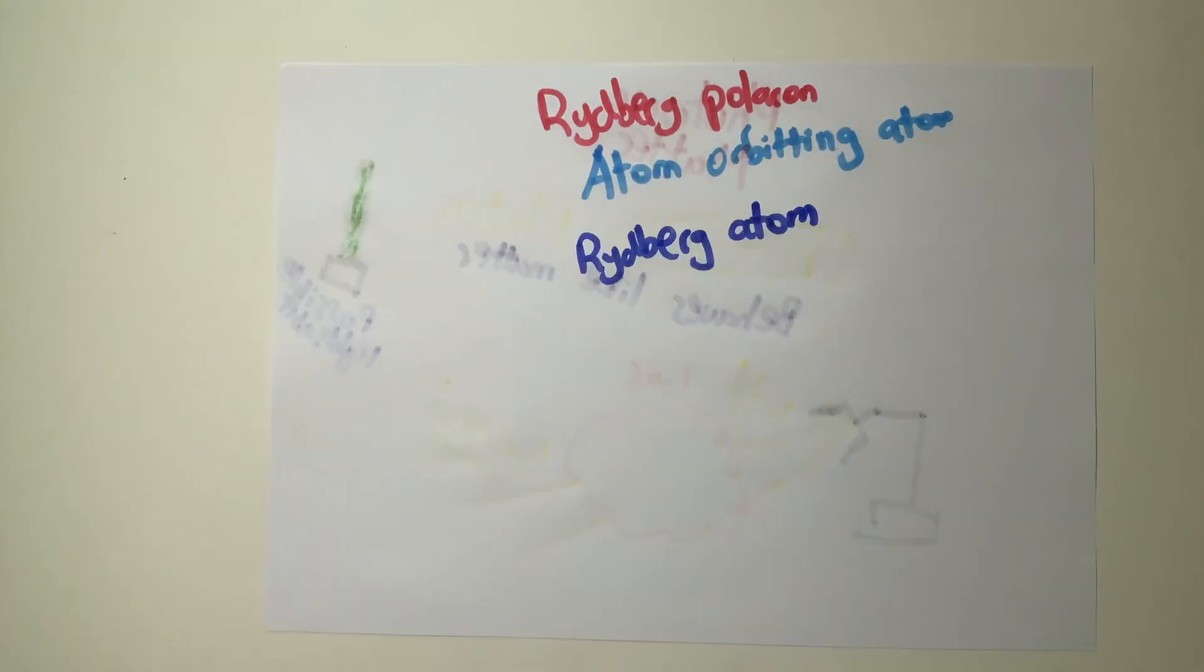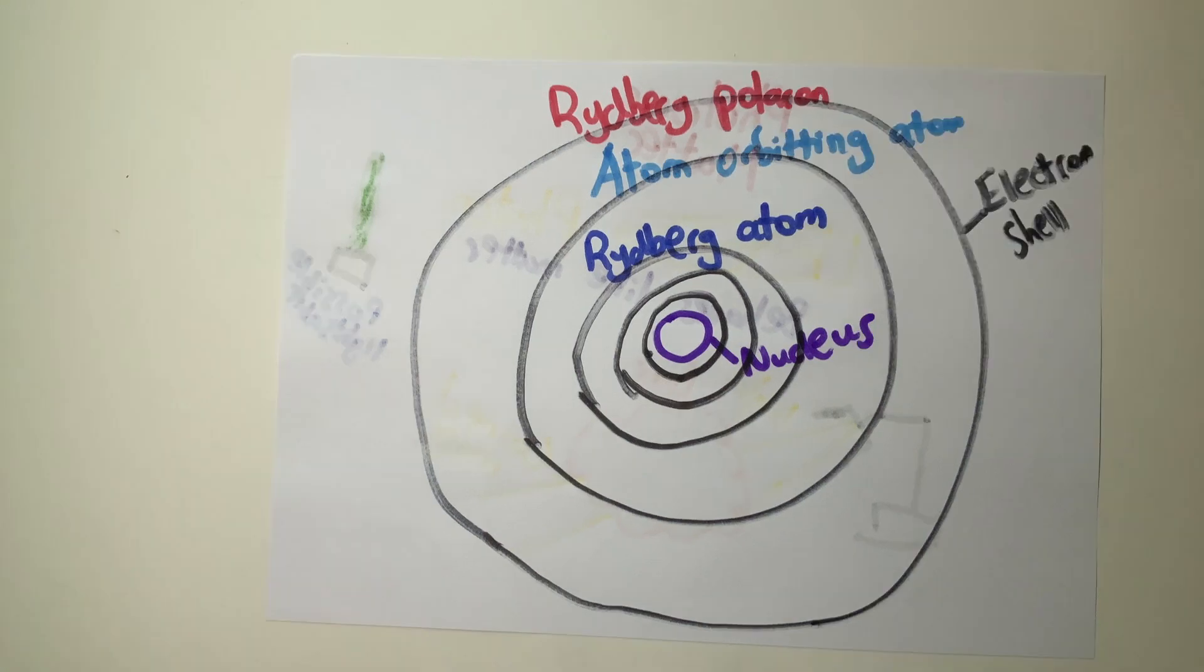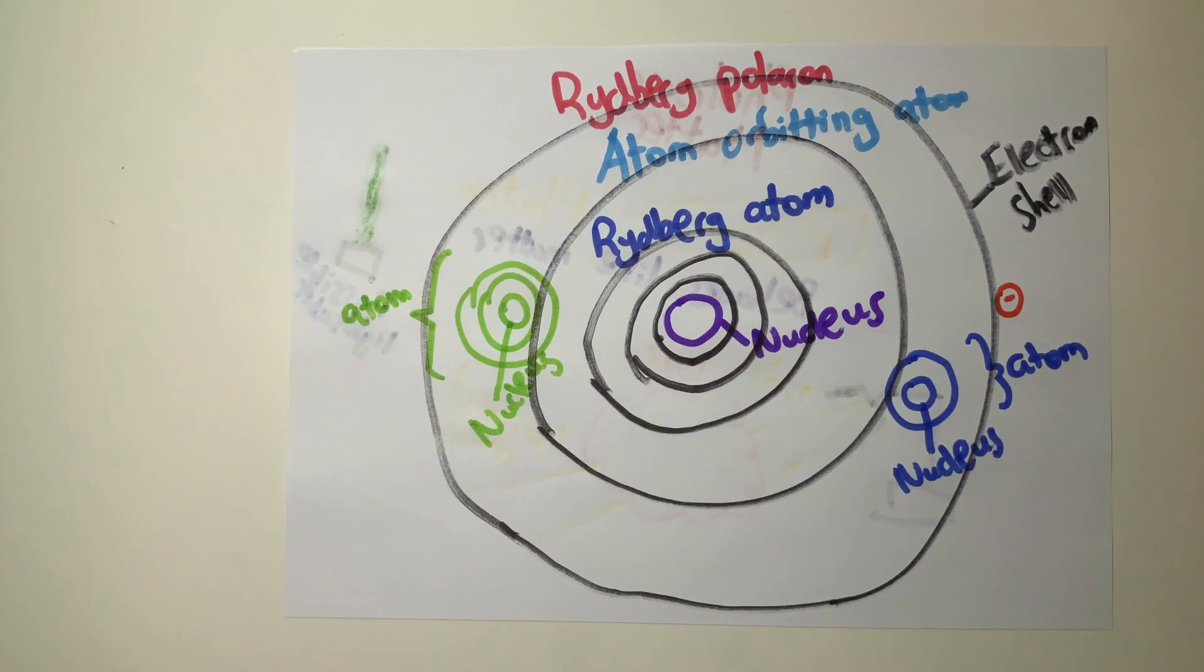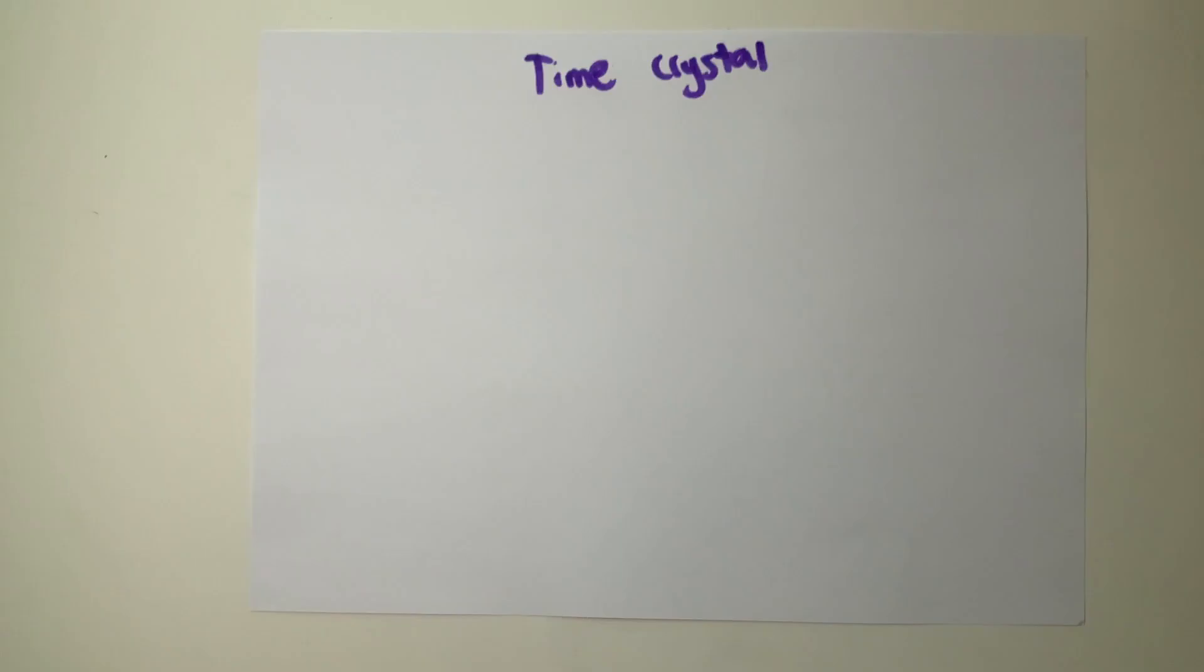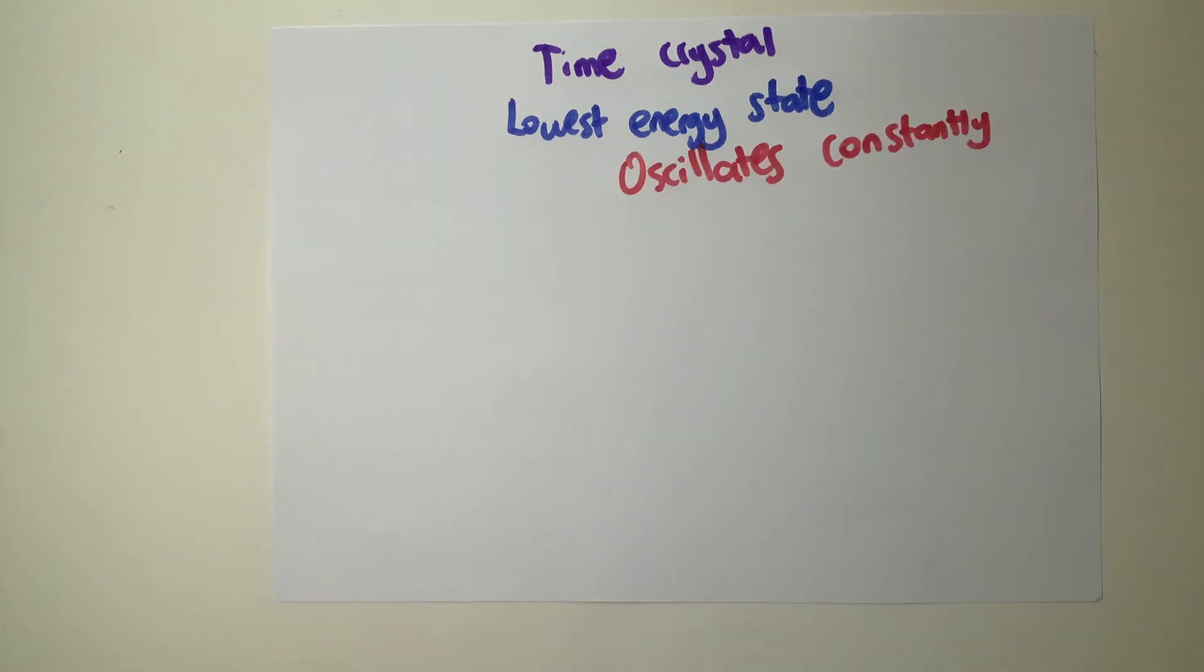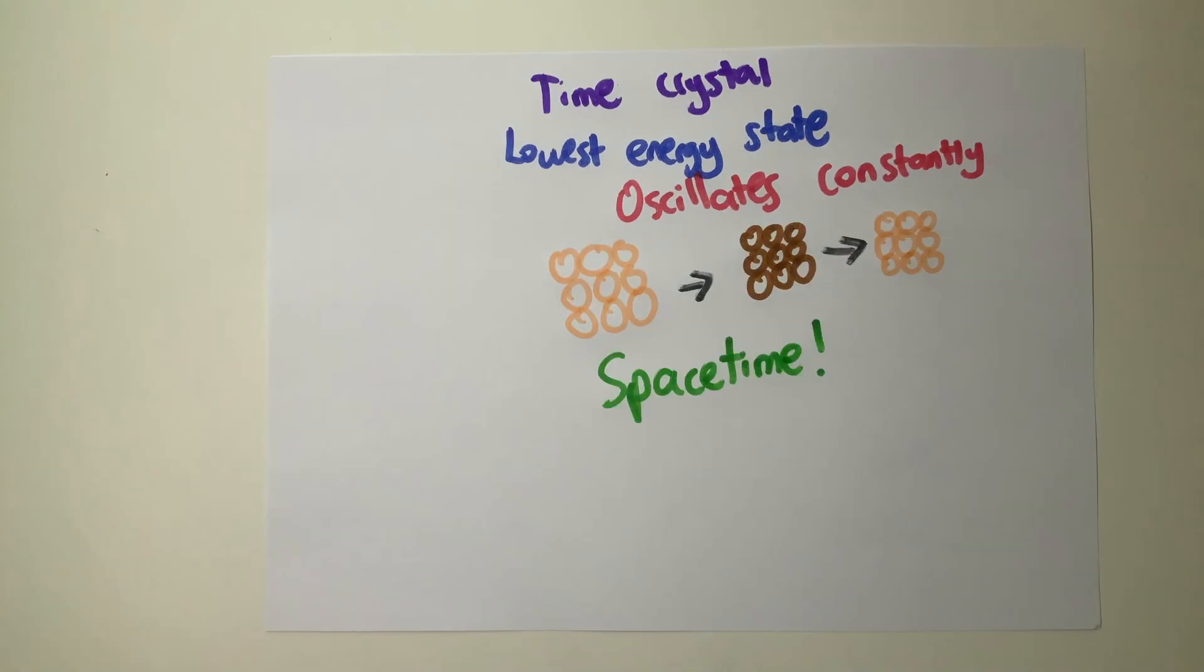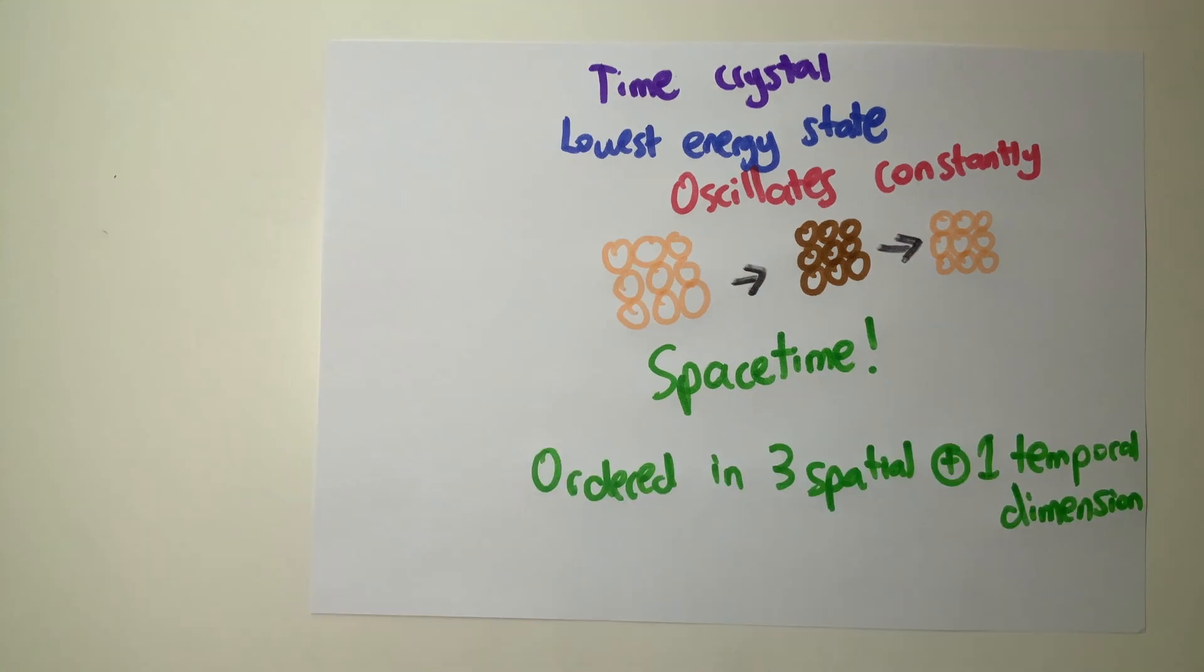The Rydberg polaron is a giant atom with smaller atoms actually orbiting within it. A Rydberg atom is an atom in which a single electron is elevated to a high energy level. Finally, a time crystal is a structure occupying its lowest possible energy state that constantly oscillates between different orientations, resembling a crystal in space-time.